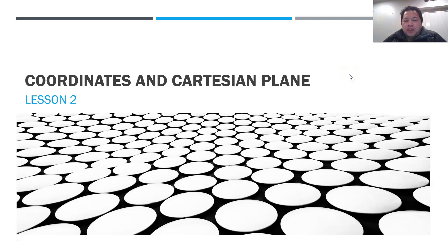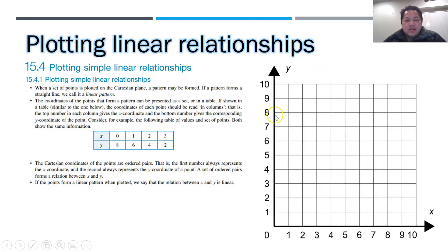Okay, moving on to part 2 of coordinates and Cartesian plane. Hope you guys had some fun during the last lesson. So again, how do we plot points and how to determine the relationship? Whenever you plot points and you actually get a straight line, we actually call that a linear relationship.